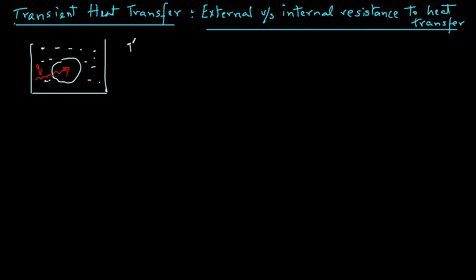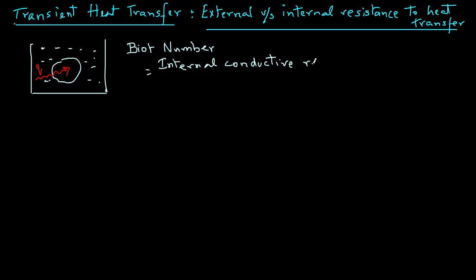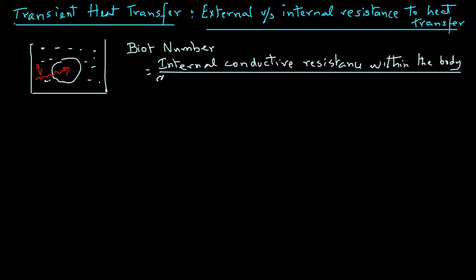The first person who recognized the importance of this was Biot. There is a dimensionless number named after Biot. This Biot number is a ratio between the internal conductive resistance within the body divided by the external convective resistance at the surface of the body.